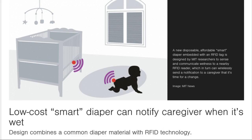When the sensor detects dampness in the diaper, it sends a signal to a nearby receiver, which in turn can send a notification to a smartphone or computer.